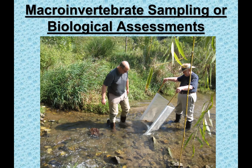Macroinvertebrate sampling basically looks at the benthic invertebrates — the benthic community — of a particular stream. We're looking at what's on the bottom, what's living there 24/7, 365, because they're the ones that aren't moving. They live there their entire lives, dealing with pollution, sediment issues, and other things coming down the stream, and are really affected by that. So they're a really good indicator for that particular stream.